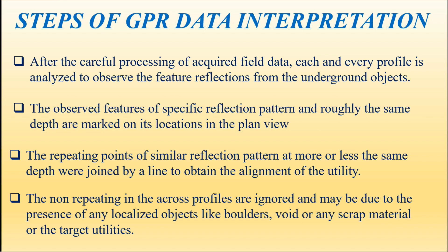The last step: non-repeating reflections across profiles are ignored, as they may be due to the presence of localized objects like boulders, voids, or scrap material. If the object reflections are not the same in different sections and the depth also differs, you can interpret that the object is not a continuous feature — it may be a point feature like a boulder, void, or scrap material — and you should ignore it during interpretation.